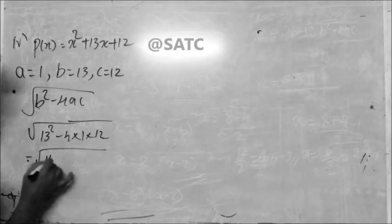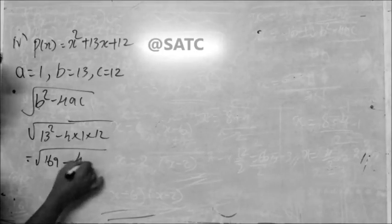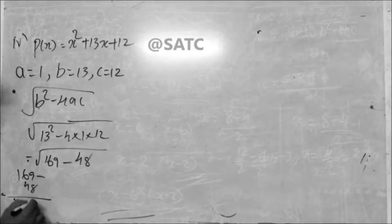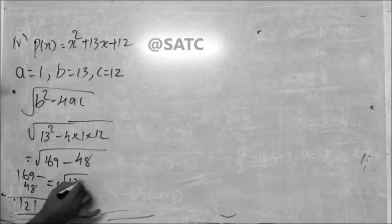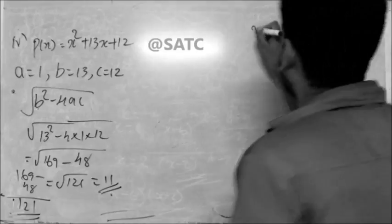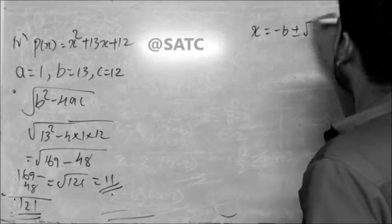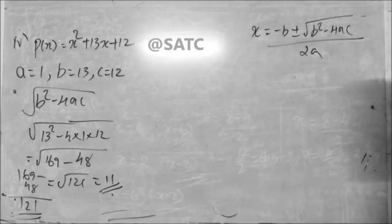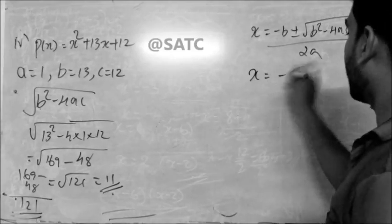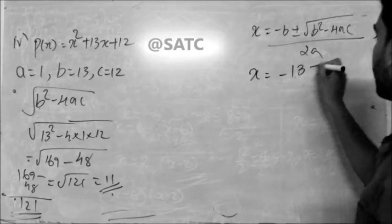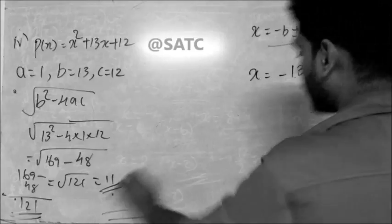The discriminant: 169 minus 4 equals 148. So x is equal to minus b, plus or minus root of b squared minus 4ac. X is equal to minus — what is b? 10. Plus or minus — what is root of b squared minus 4? 10. By 2a.